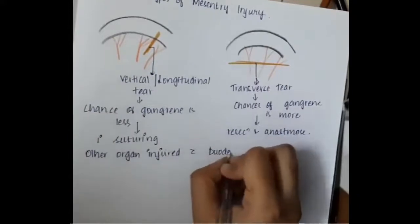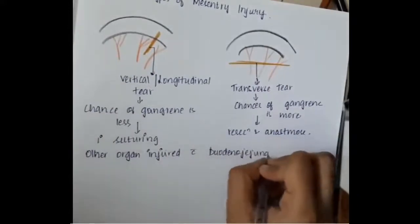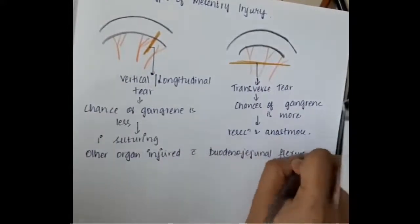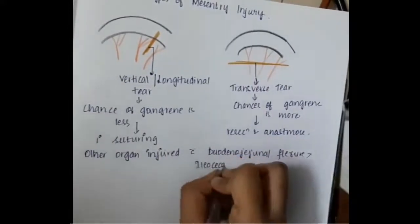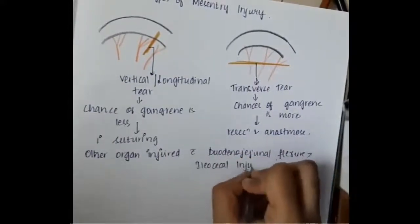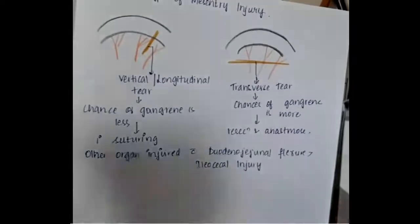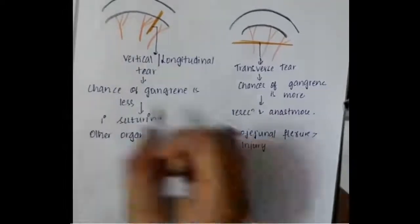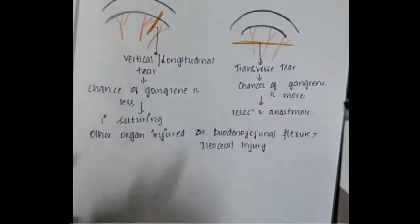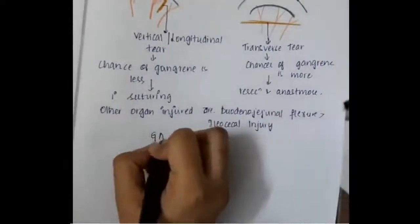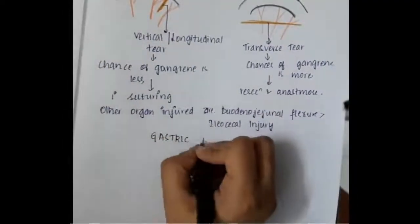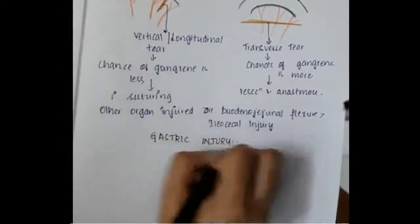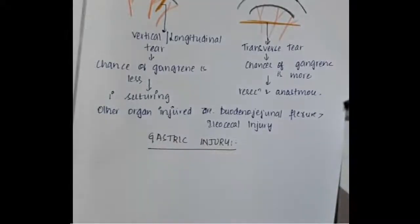Other organs injured are the duodenojejunal flexure followed by the ileocecal junction.